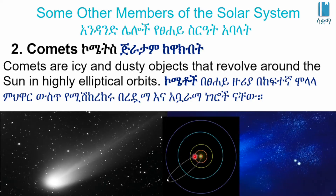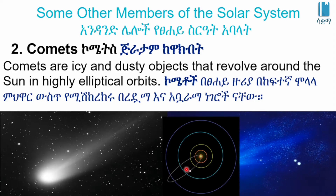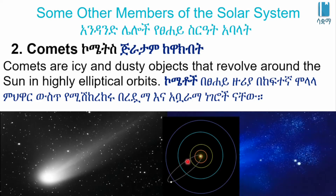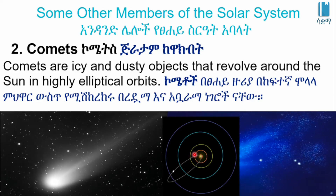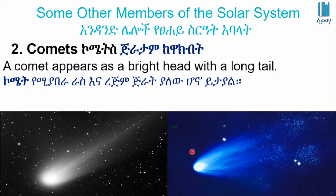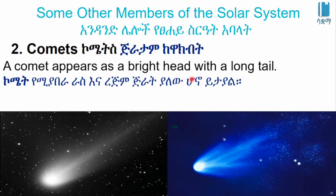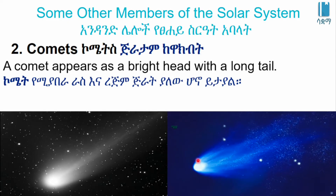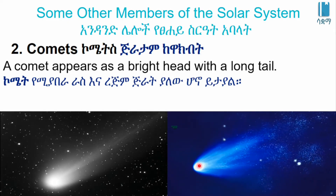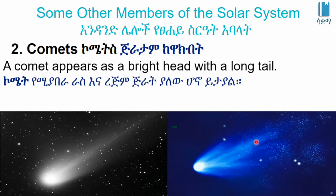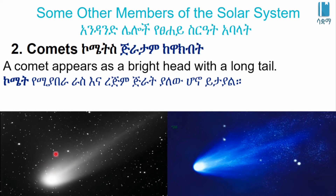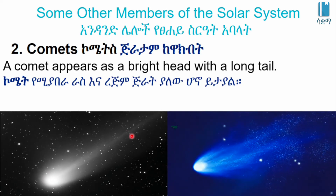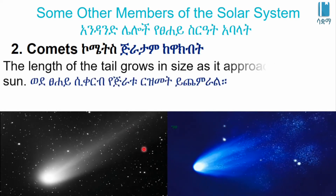A comet appears as a bright head with a long tail. As it approaches the sun, the length of the tail grows.